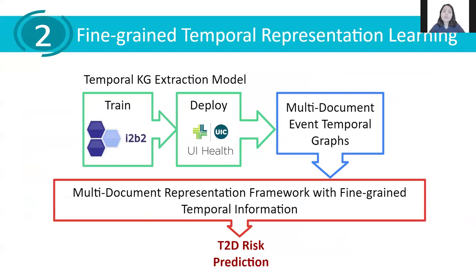To answer our second research question, we propose to deploy the model trained on the I2B2 corpus to a large corpus comprising 10 years of diabetic and non-diabetic patients' journeys at UI Health, the hospital at the University of Illinois. We will leverage dynamic graph neural networks to model the evolving narrative in multiple temporal graphs extracted over subsequent visits for accurate patient representation and prediction of type 2 diabetes risk.